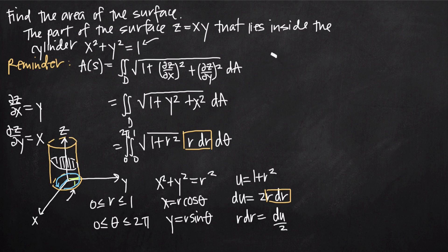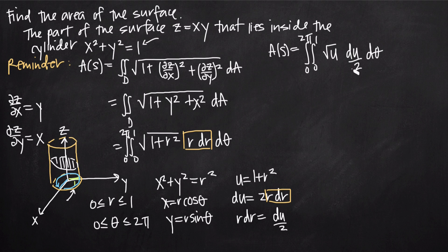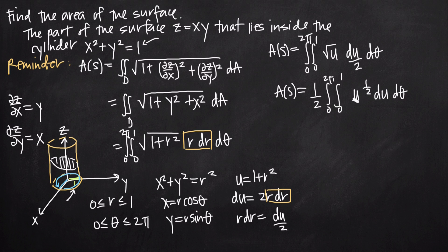Our integral becomes the integral from 0 to 2π and 0 to 1 of the square root of u times du over 2 dθ. The 2 in the denominator is a constant we can pull out front, giving us 1/2 times the double integral of u to the 1/2 du dθ. Taking the antiderivative, we add 1 to the exponent: 1/2 plus 1 gives 3/2, so we get u to the 3/2 divided by 3/2, which is the same as multiplying by 2/3. We evaluate this over the interval 0 to 1.